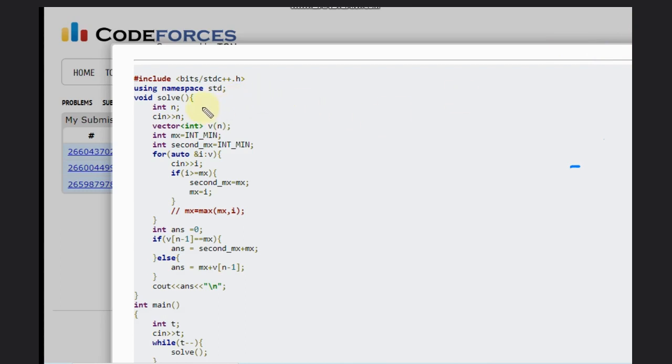We need to take the input like this - we can declare the vector, take the input, and we need to find the max value and the second max value. So we have declared like this, take the input, and how can we find the second max and max. If that value is greater than equal to max, that means second max will be the maximum value and our maximum value is the new value. That is our goal.